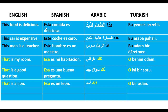Starting with 'this' for singular near objects: 'This food is delicious' — Español: 'Esta comida es deliciosa' — Arabic: 'Hadhihi al-ta'am ladhidhah' — Turkish: 'Bu yemek lezzetli.' 'This car is expensive' — 'Este coche es caro' — Arabic: 'Hadhihi as-sayyarah ghaliyah' — Turkish: 'Bu araba pahalı.' 'This man is a teacher' — 'Este hombre es un maestro' — Arabic: 'Hadha ar-rajul mudarris' — Turkish: 'Bu adam öğretmen.'